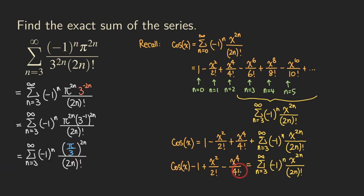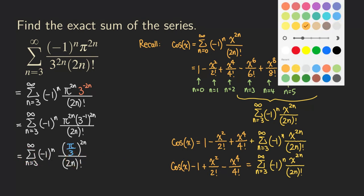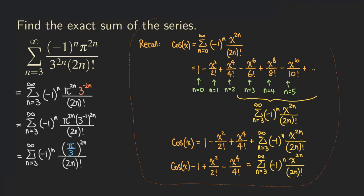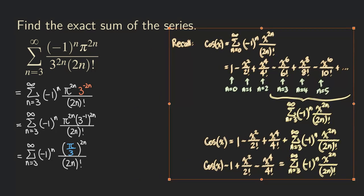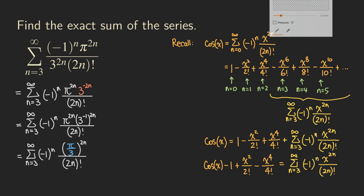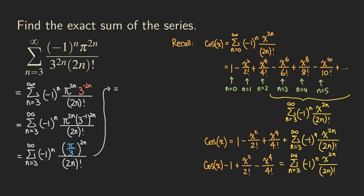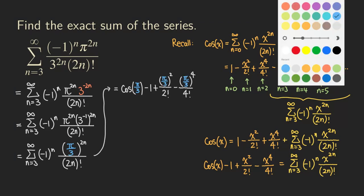Now we have an expression for our series: we just replace x with pi over 3. So the sum equals cosine of (pi over 3), minus 1, plus (pi over 3) squared over 2 factorial, minus (pi over 3) to the 4th power over 4 factorial. And of course we can now calculate this.